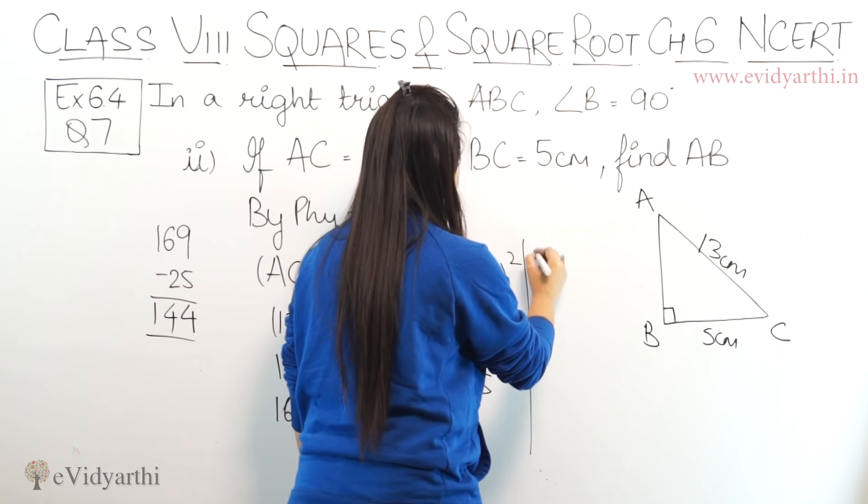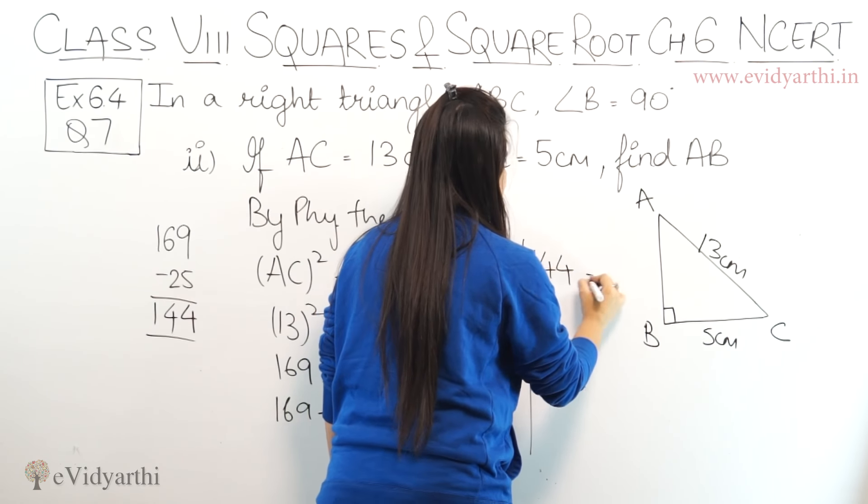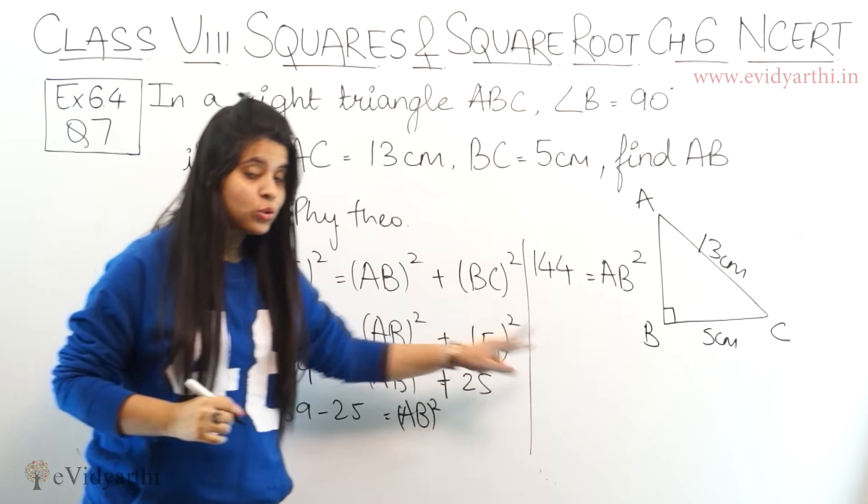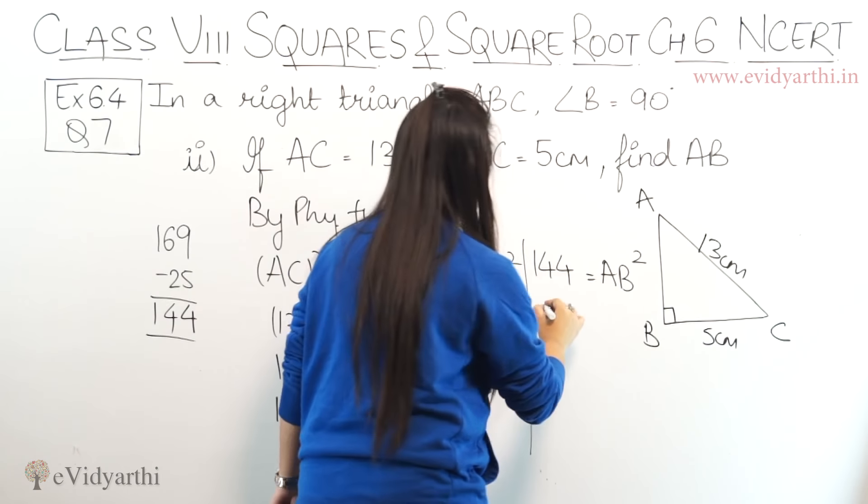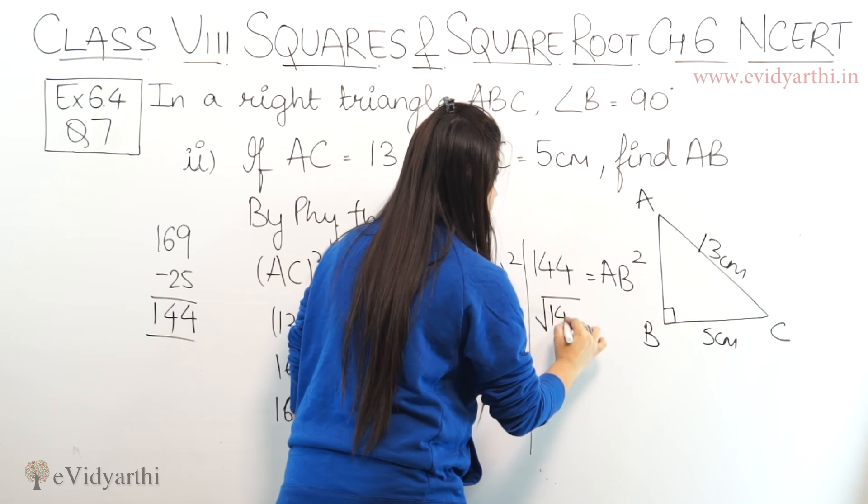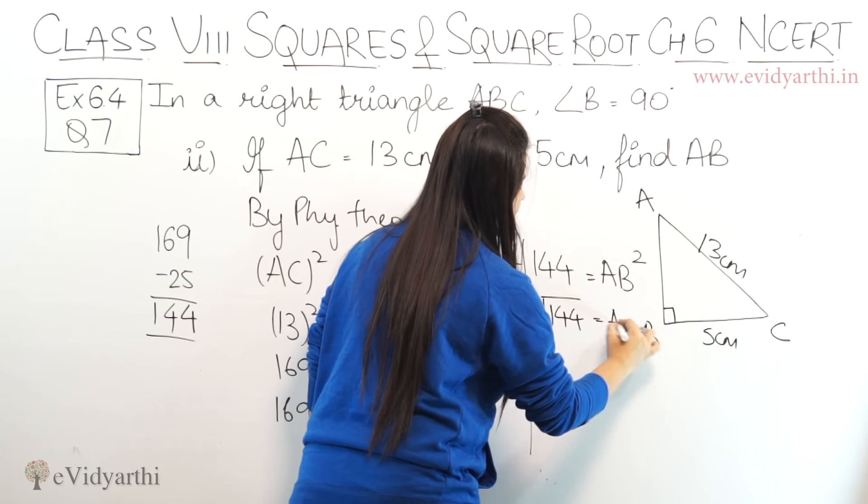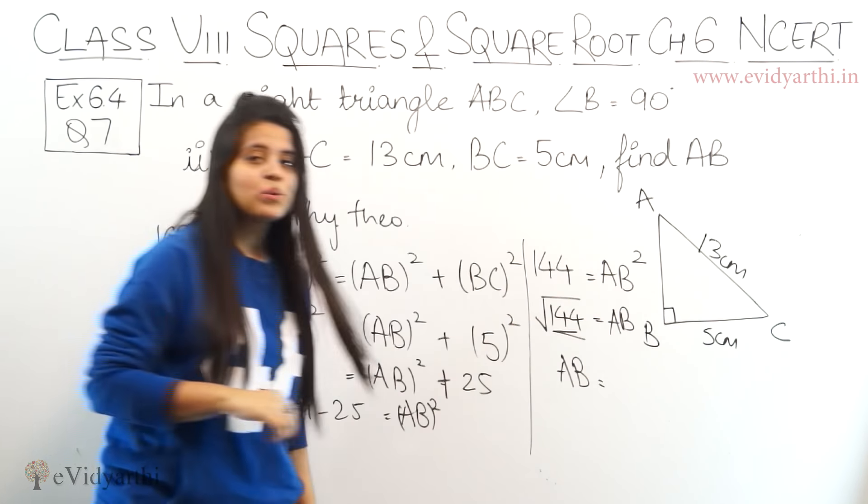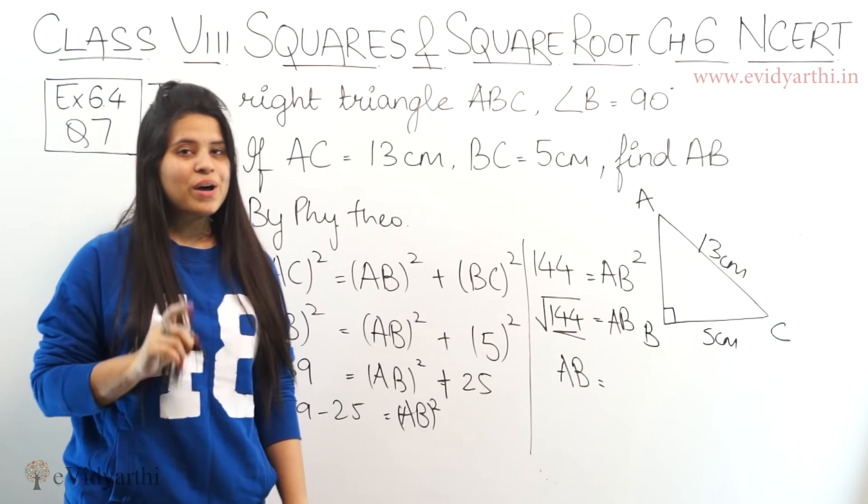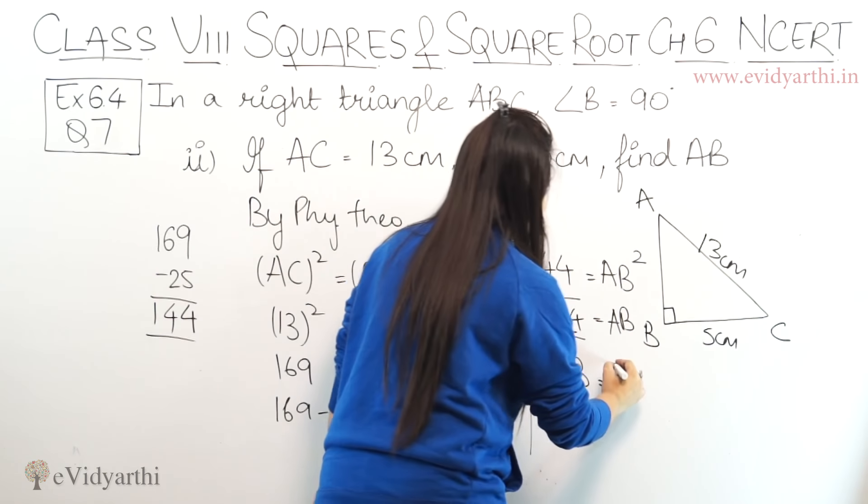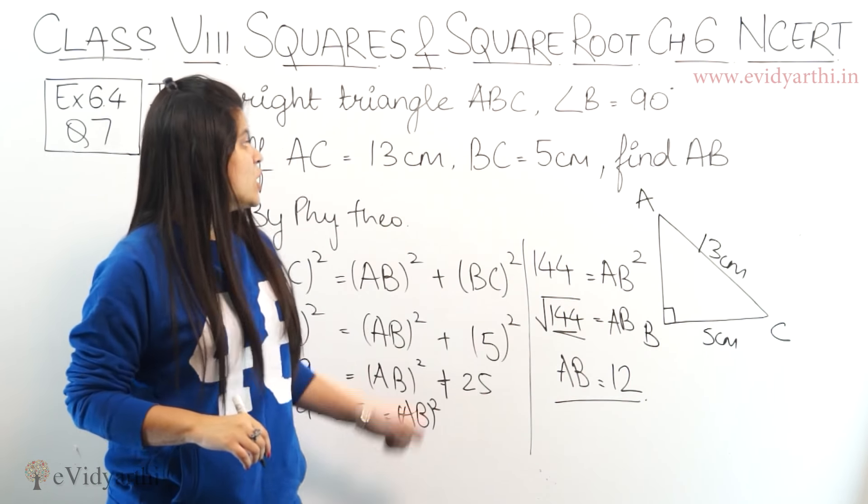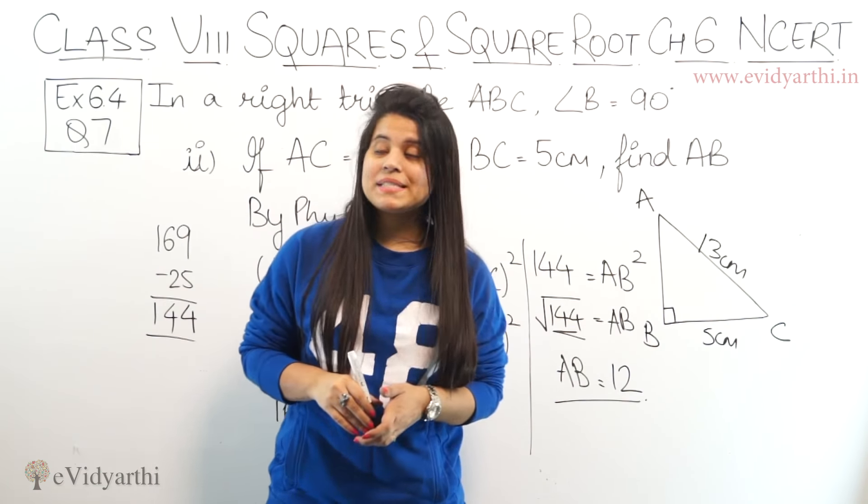This means 144 equals to AB squared. Here square becomes root on the other side. So this will be square root of 144 equals to AB. 144 is the square of 12, so AB equals to 12 centimeters. So this was the second part of question number 7.